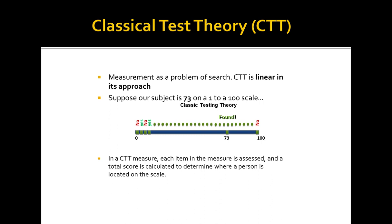This next slide illustrates how a classical test works. You present each item — say a subject scores 73 on a 0-to-100 scale — you get a response to each item, sum the responses, and end up with the overall score of 73. Each item in the measure is assessed and a total score is calculated to determine the patient's location on the scale.